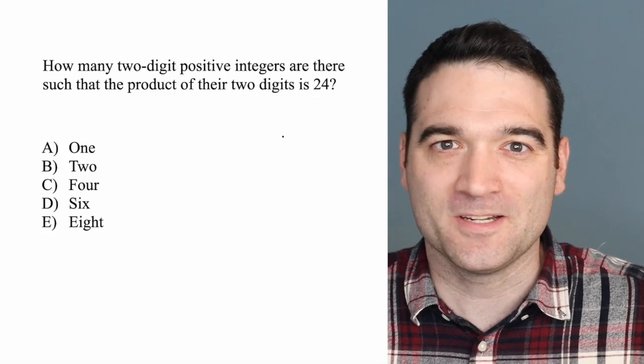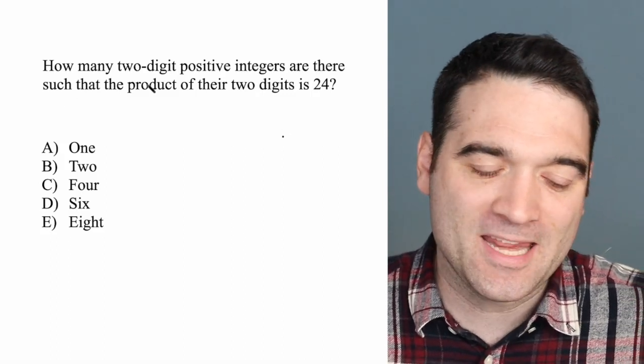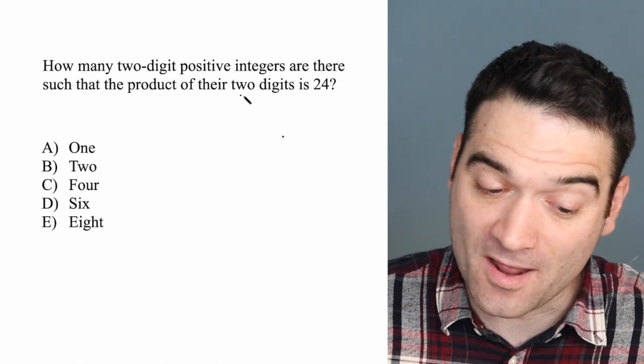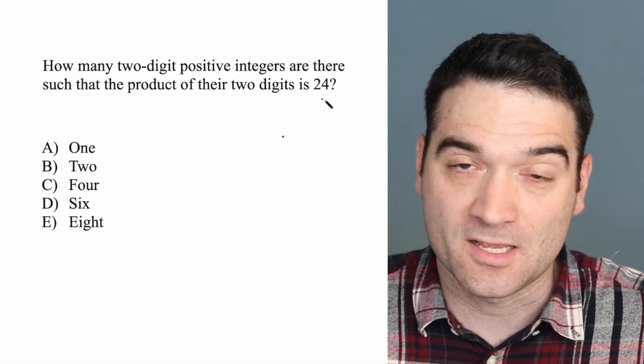Here's a GRE arithmetic question. Let's take a look. How many two-digit positive integers are there such that the product of their two digits is 24?